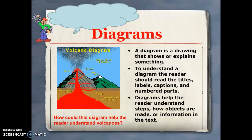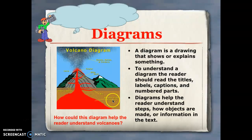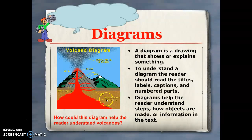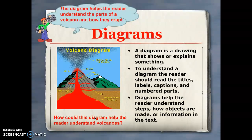We often see diagrams in non-fiction text as well. Diagrams help us explain how something works, such as this volcano. This diagram helps the reader better understand the flow of magma in a volcano. In order to understand a diagram, we must read the different parts — such as the labels, captions, and numbered parts — which help us understand the steps or how information works. The diagram shown here helps the reader understand the parts of a volcano and how volcanoes erupt.